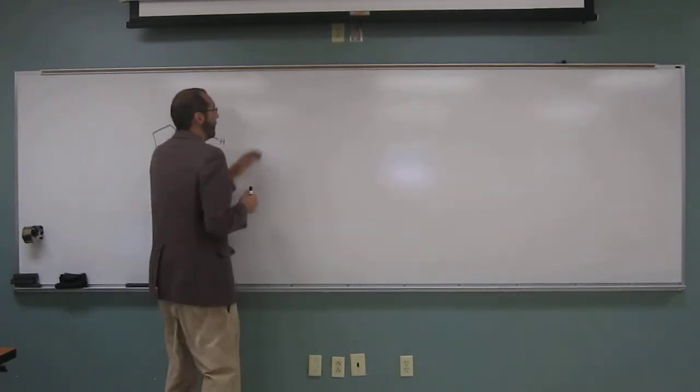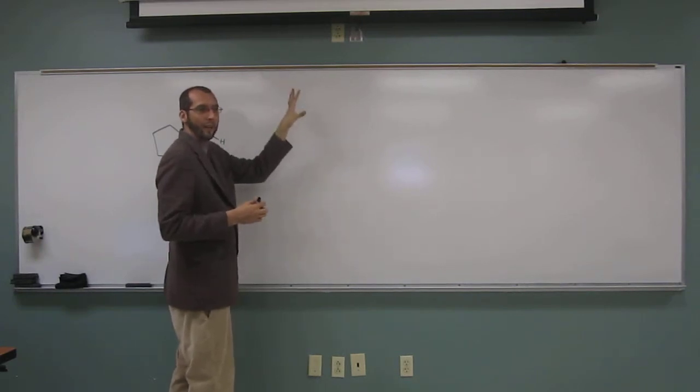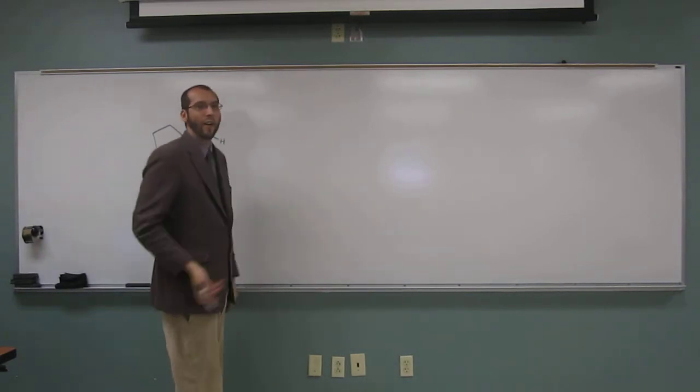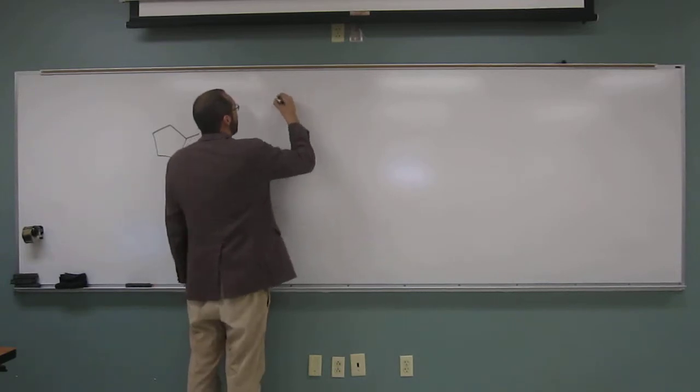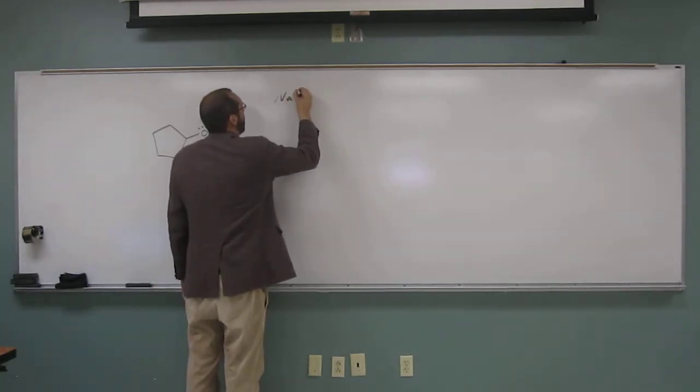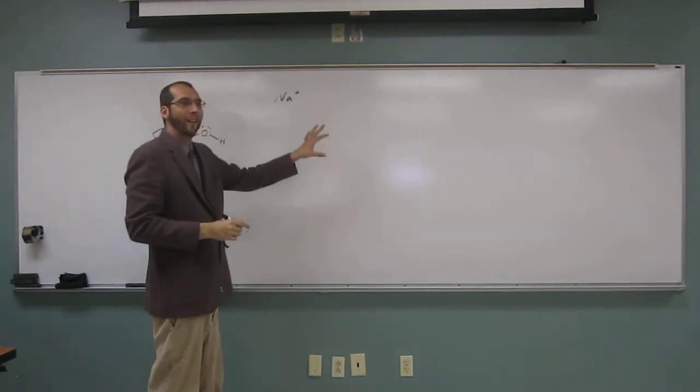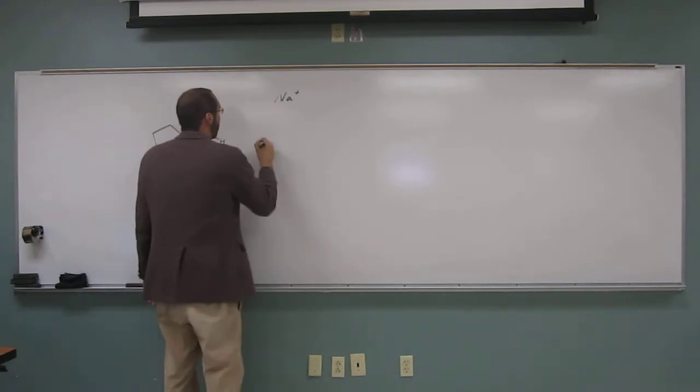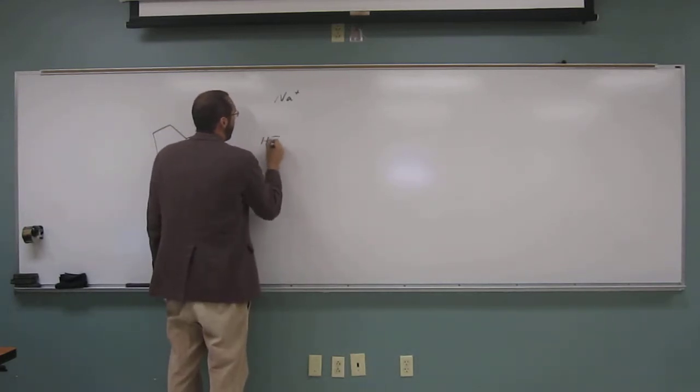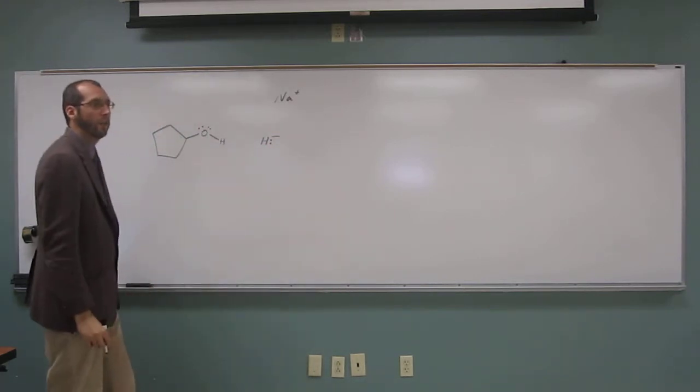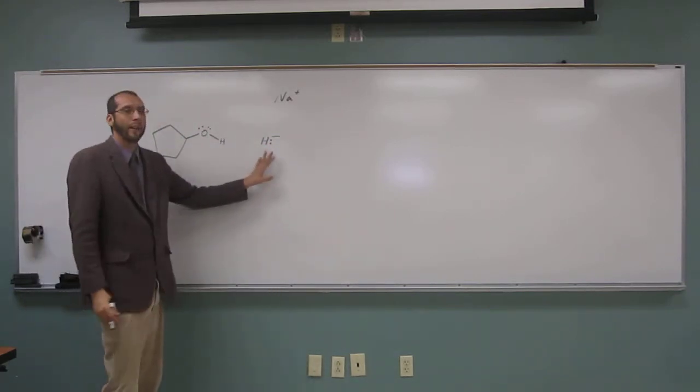So remember, the sodium just kind of is a spectator ion, so just the hydride is what we're really going to draw. We can draw the sodium out there. So we can draw our kind of intermediate if you want. So hydride is a hydrogen with a negative charge and two electrons. So that's the way I like to draw it.